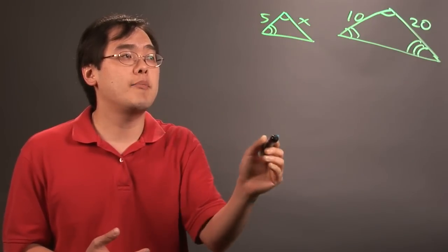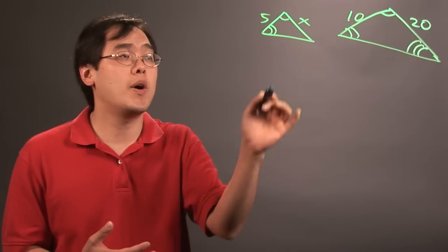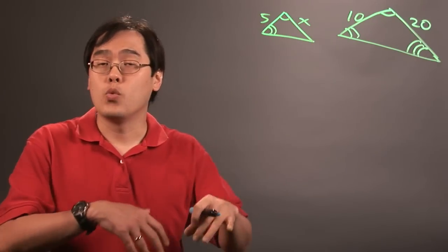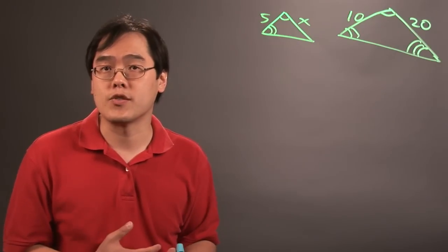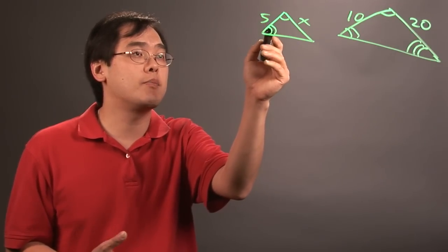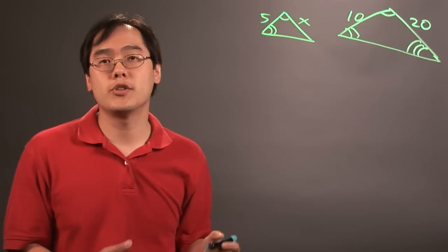put the smaller numbers on top in the proportion, or if you want the larger numbers on top. Now, whatever path you go, you're going to get the same answer for x. So let's just, for consistency purposes, put the smaller numbers in the numerator.